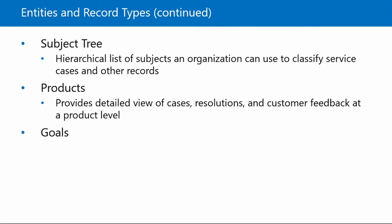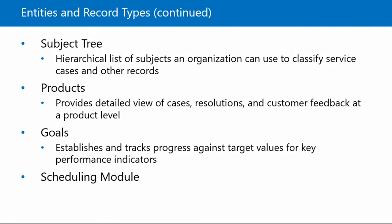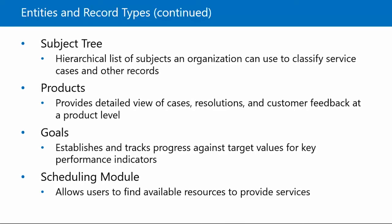Next, there are goals. Organizations can use the goal management features to establish and track progress against target values for key performance indicators or KPIs. For service management, these might include metrics such as cases resolved or in-progress cases. And then finally, there is the servicing module. The servicing module allows users to find qualified resources that are available to provide specific services to customers. For example, if a customer contacts a service user asking if someone can come onsite to provide specific services, the user could create a service activity and from there identify the service as well as the timeframe the customer would like the service to be provided. While this module is technically part of the overall service entity, some organizations might find it is not applicable to their business and will choose not to leverage that functionality.